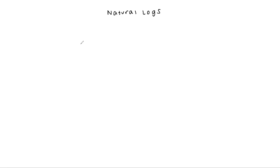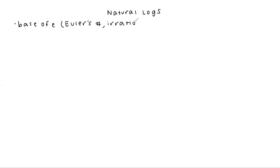We've already talked about common logs, which have a base of 10, and we've talked about other logs that have bases of different numbers. Natural logs specifically have a base of E — referring to Euler's number. This is an irrational constant, a number that never ends, like pi. It starts with 2.718281828, but then it keeps going on and on and doesn't actually repeat anymore.